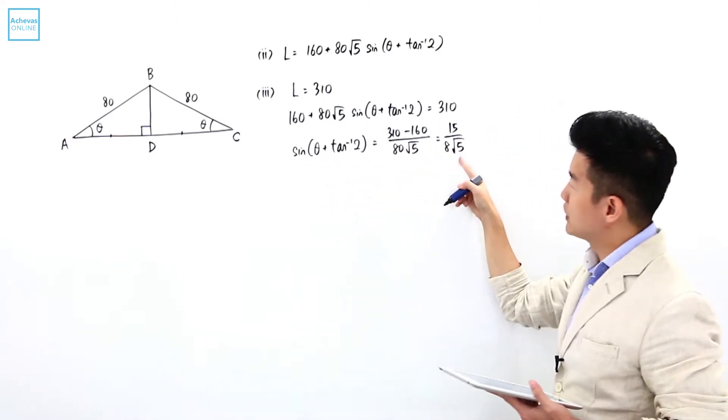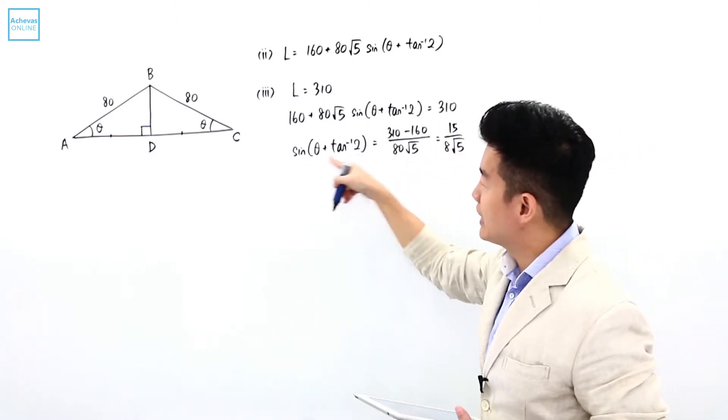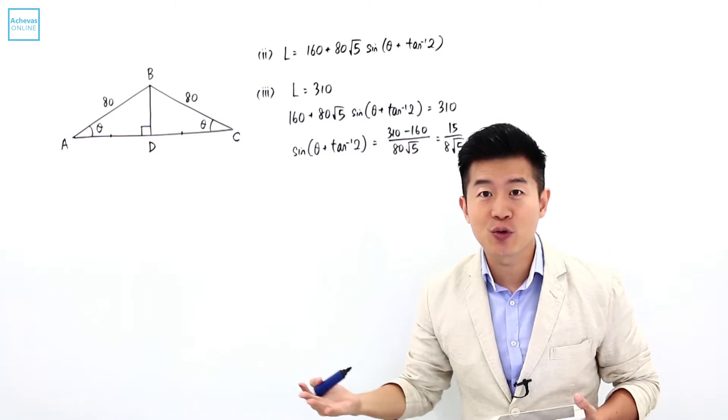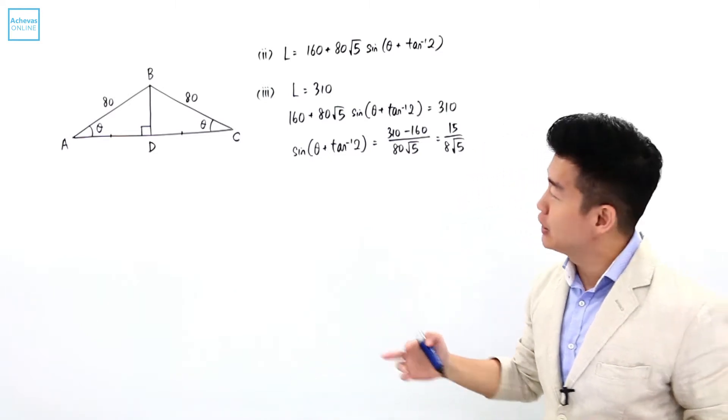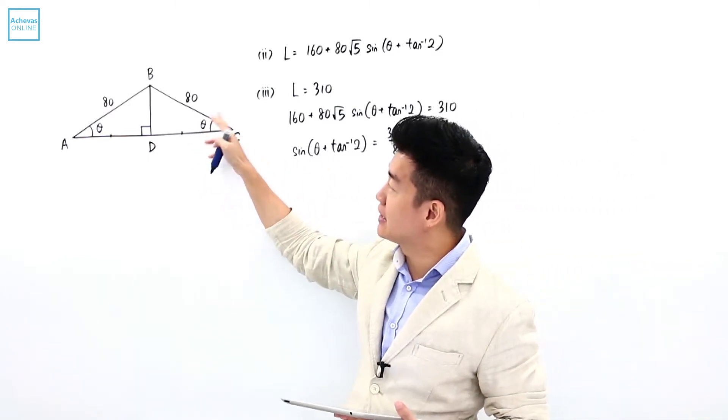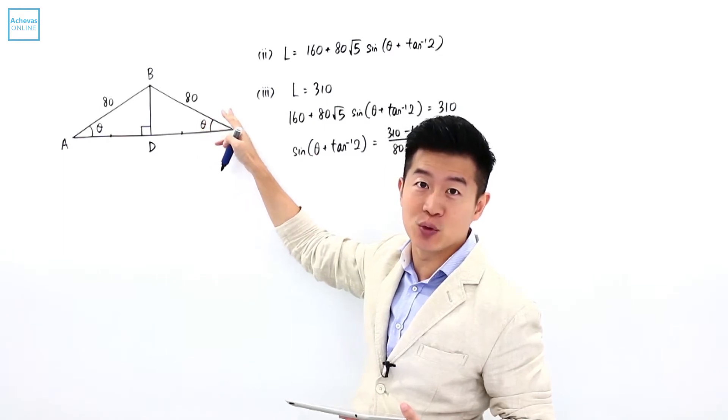And since sine is a positive value, that means this angle here is going to be either in the first quadrant or the second quadrant. And in order for me to maintain that theta is an angle that is between 0 to pi over 2...